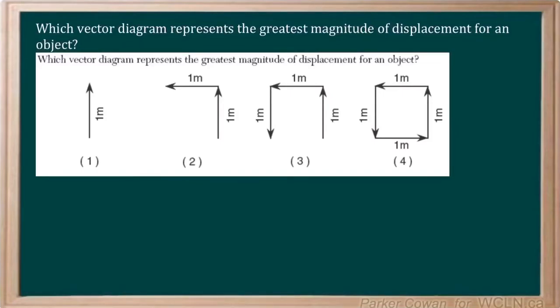Which vector diagram represents the greatest magnitude of displacement for an object? Alright, so our magnitude of displacement is going to be defined as basically the distance from our start point to our end point, right?